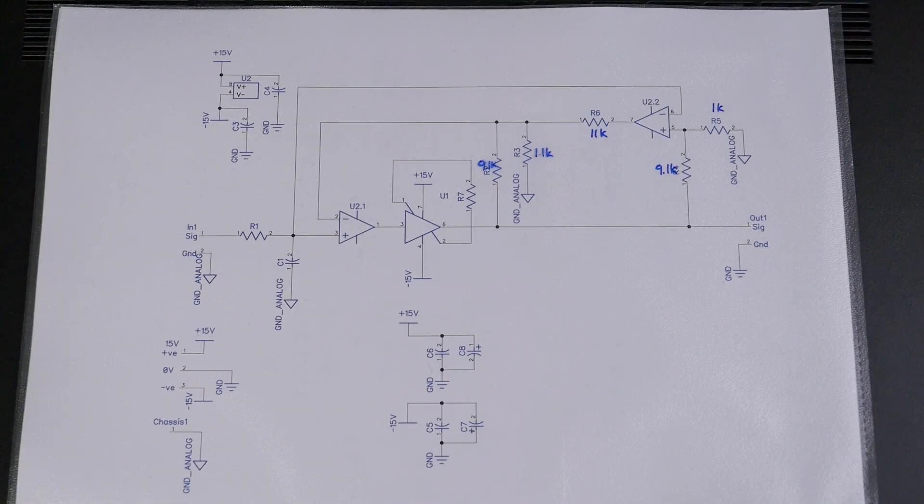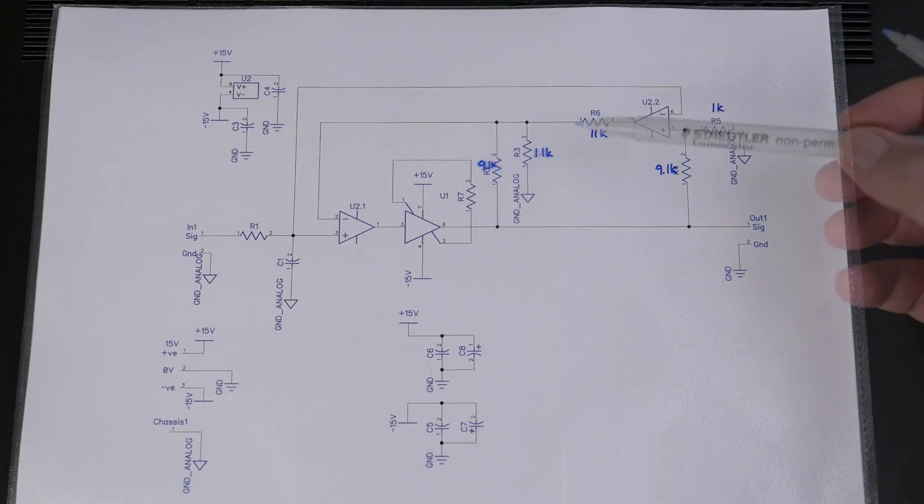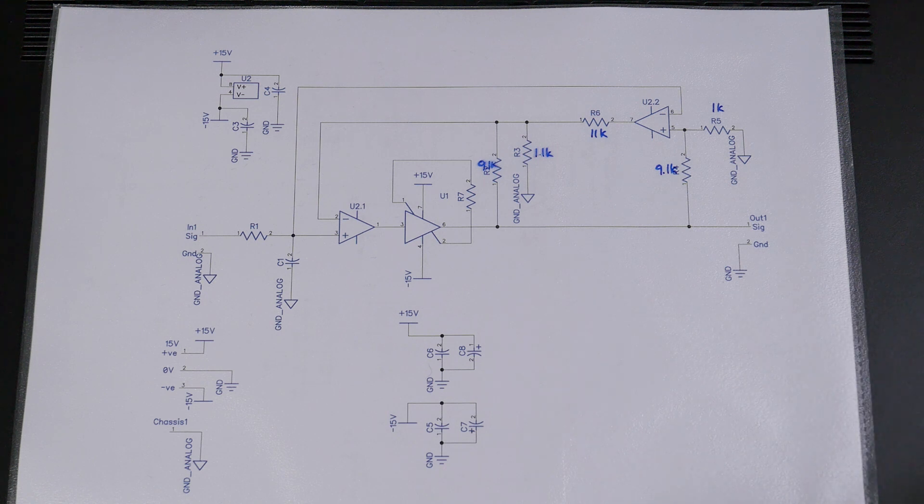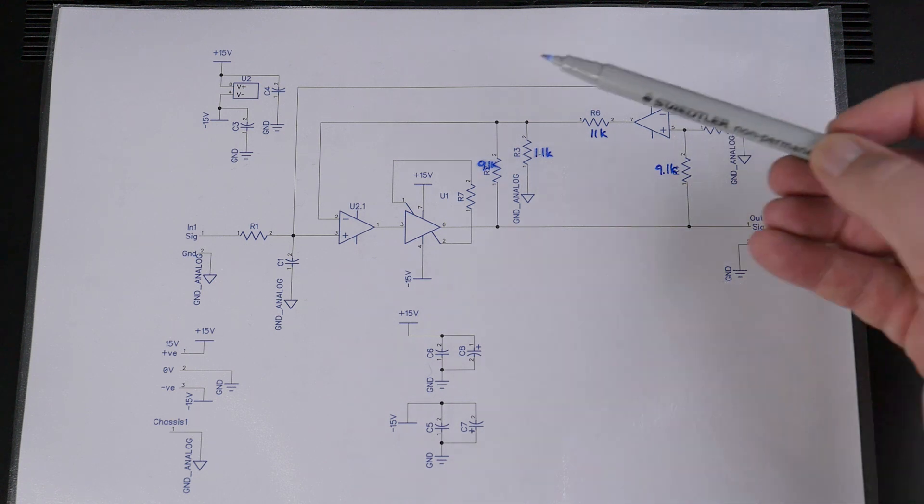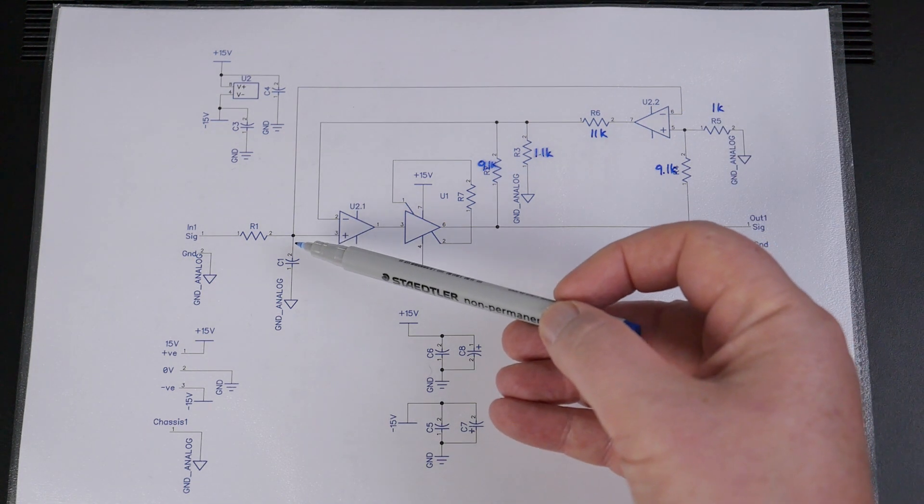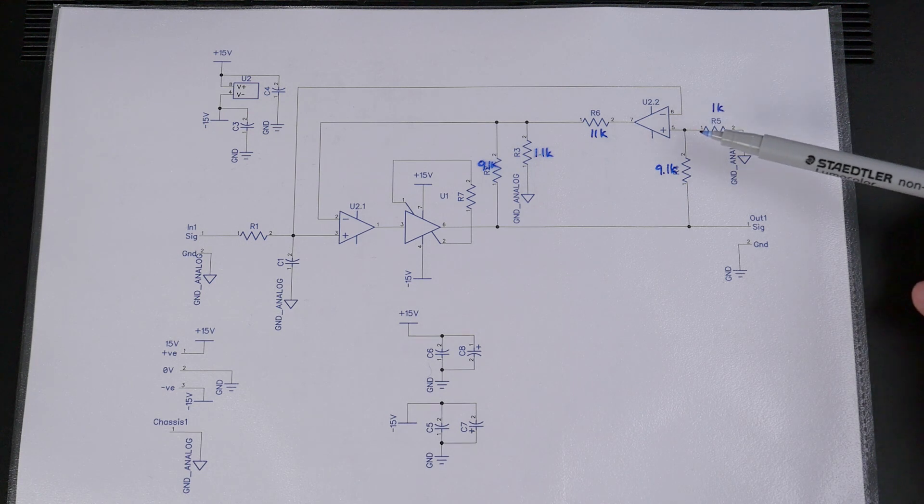So looking back at the full schematic again, we've put this back in and what we have here is an error amplifier. If we look at the two inputs here, we see one of them is drawing basically from the input and the other one is drawing from a voltage divider on the output.